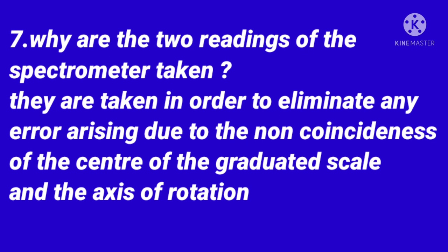Why are two readings of the spectrometer taken? They are taken in order to eliminate any error arising due to the non-coincidence of the centre of the graduated scale and the axis of rotation.